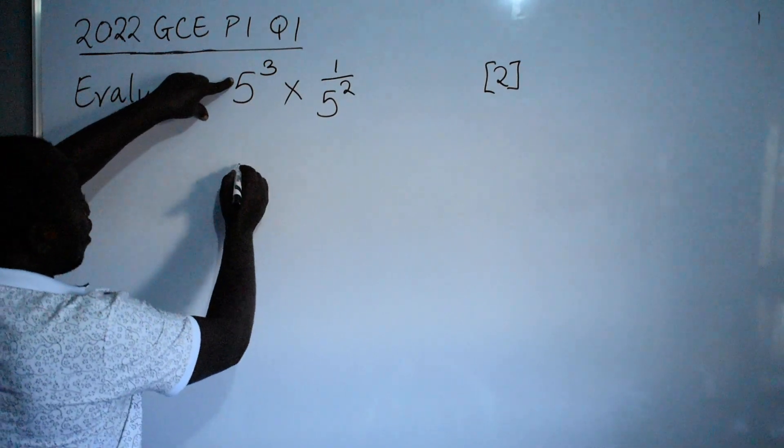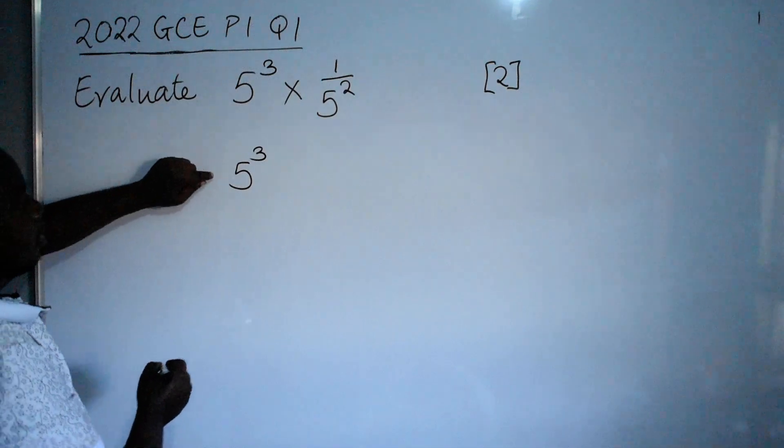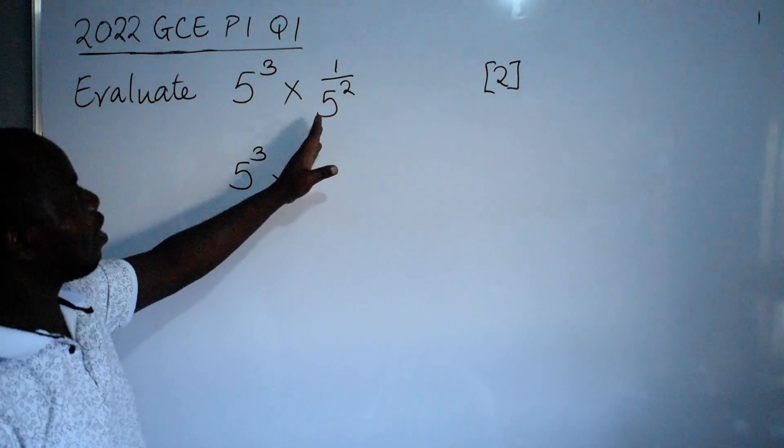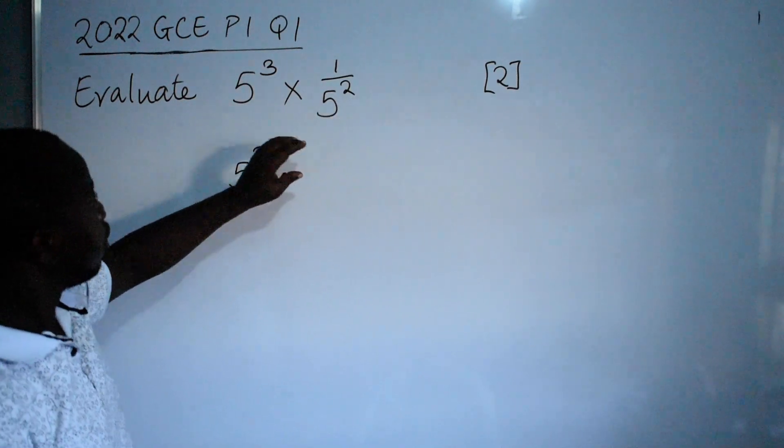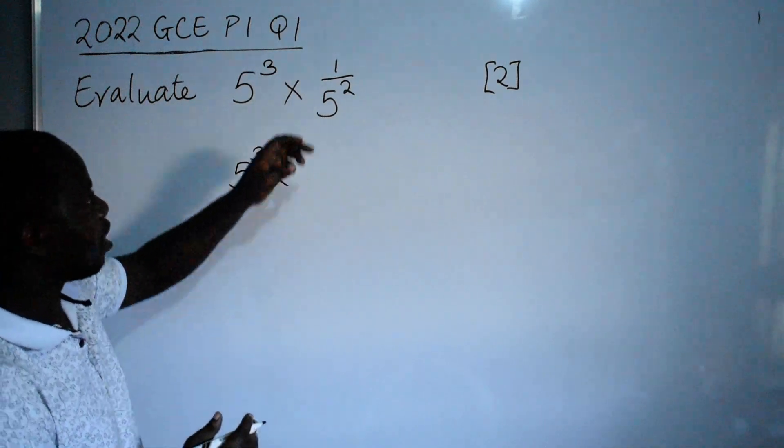I will copy this: 5 to the power 3 times, on the other side here I have 1 over 5 to the power 2. So I will be able to write this in another way without a fraction.